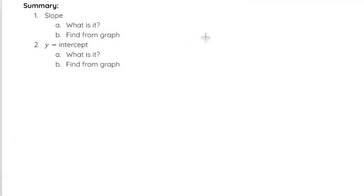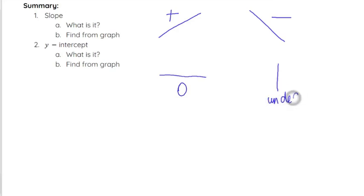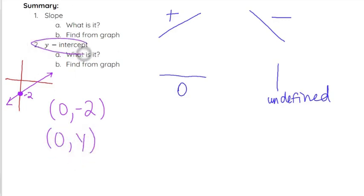As a quick reminder: slope tells us how steep the line is. Positive slopes go up from left to right, negative slopes go down from left to right. A horizontal line has a slope of zero, and a vertical line has an undefined slope. The y-intercept is the point that crosses the y-axis on your line — if this is my line crossing the y-axis at negative two, then my y-intercept is at (0, negative 2). Remember, it is always (0, y) or (0, b) for the y-intercept.